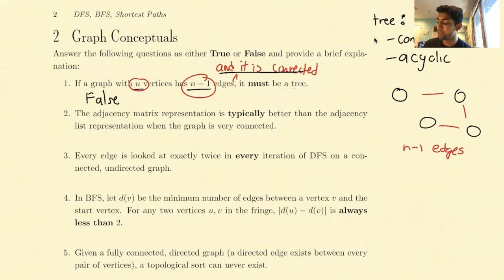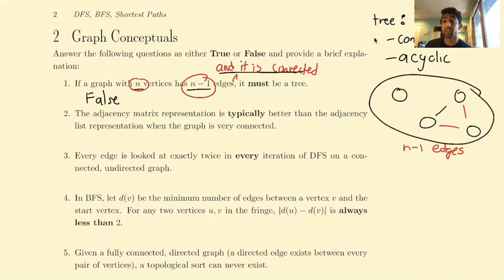A quick counter example: this graph has n-1 edges but is not a tree.